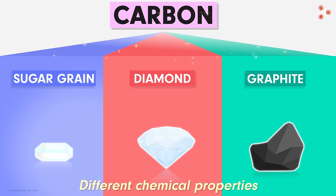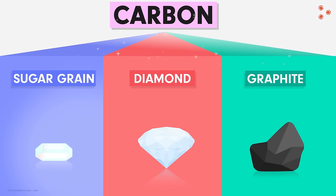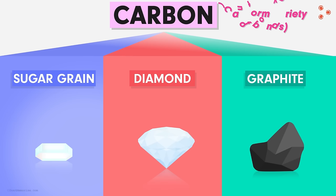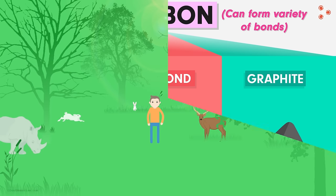Is this some kind of magic? Well, the magic lies in the element itself. The element carbon has several interesting properties, and that's what makes it special. It is capable of forming bonds with most of the elements, and that is the reason why carbon compounds are quite commonly found everywhere.